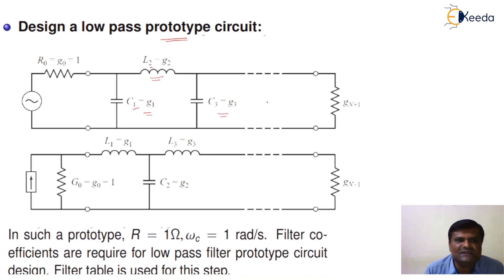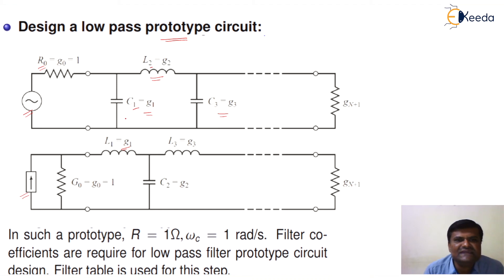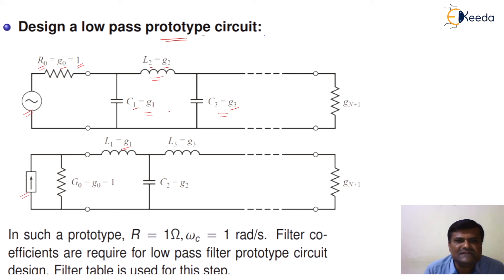The circuit can be extended up to Gm+1. Here, R0 is called the source resistance. The upper figure represents a voltage source and the lower figure represents a current source. This figure starts with capacitors and that figure starts with inductors. For a current source, the inductor is the initial component; for a voltage source, capacitance is the initial component. G0, G1, G2, and G3 are called the coefficients of the low-pass filter prototype.